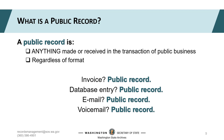Please note, the definition I've offered for a public record is for retention and destruction purposes, which is what the Washington State Archives is here to help you with. Public records are also defined under the scope of public disclosure under Chapter 42.56 of the RCW. The State Attorney General's Office can help you with disclosure and the Public Records Act.